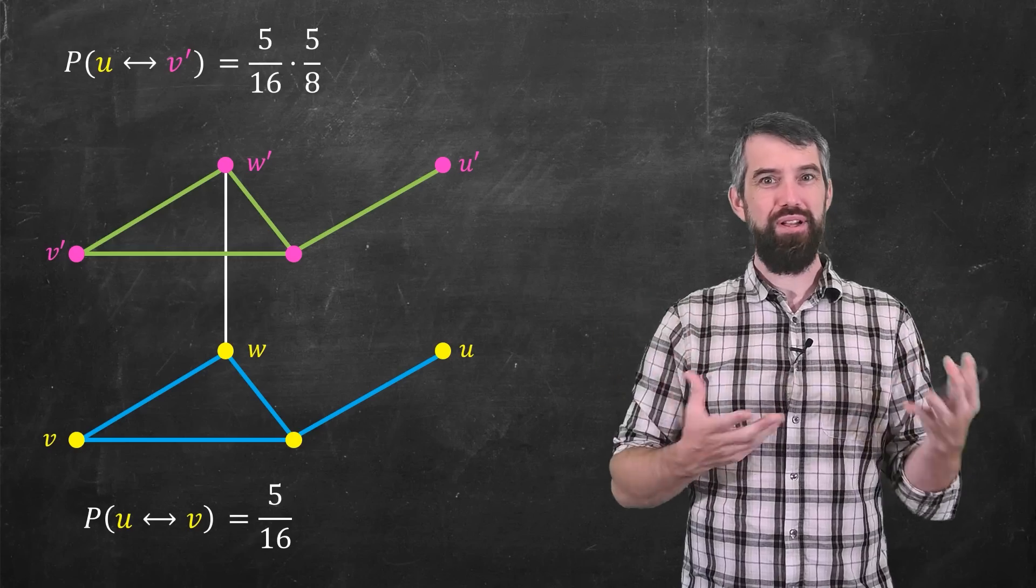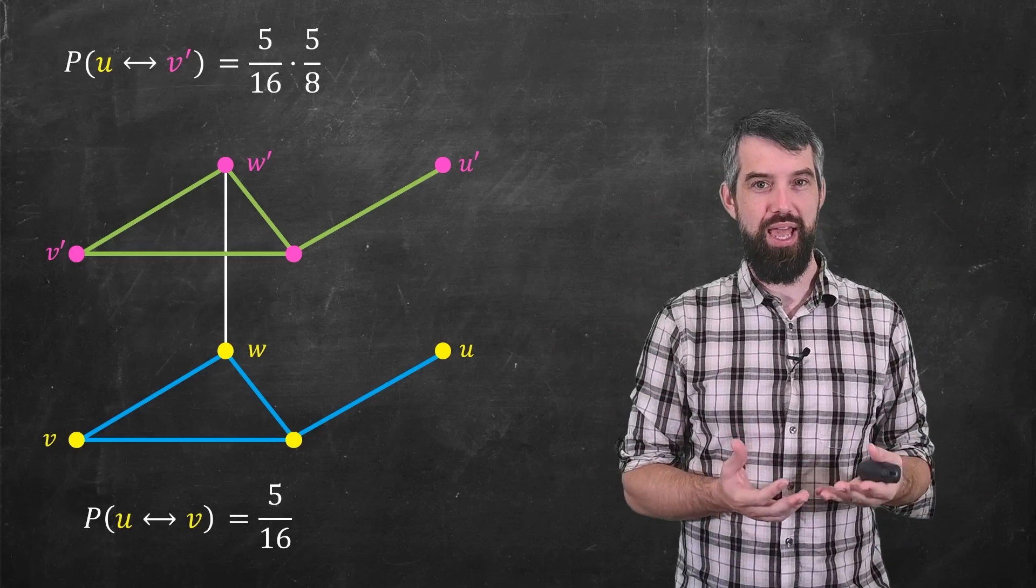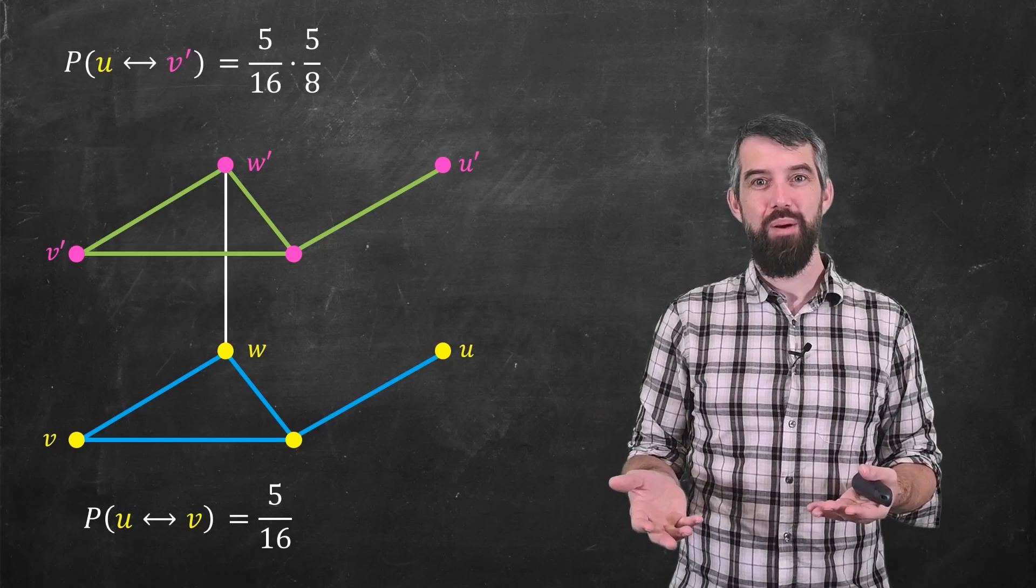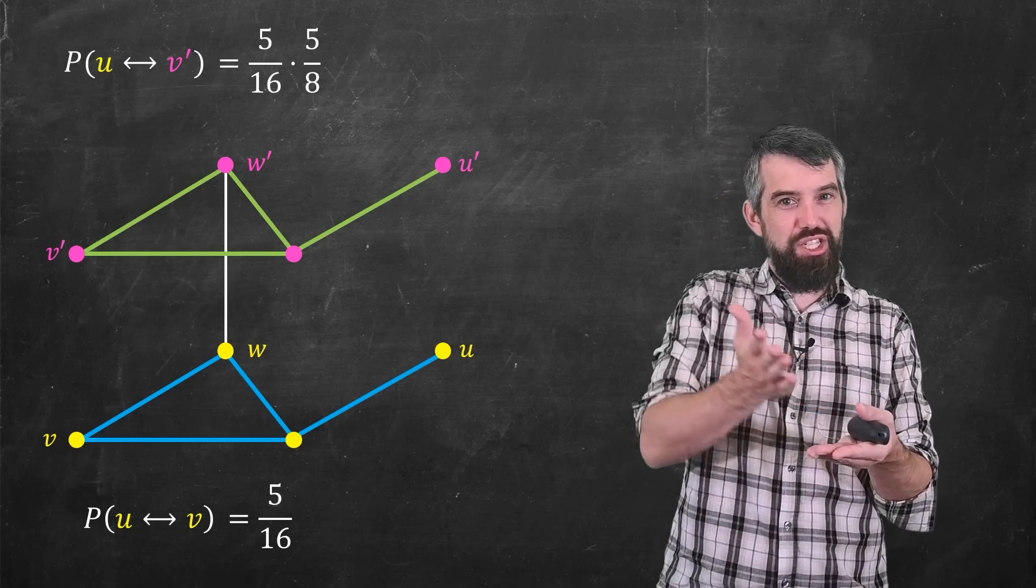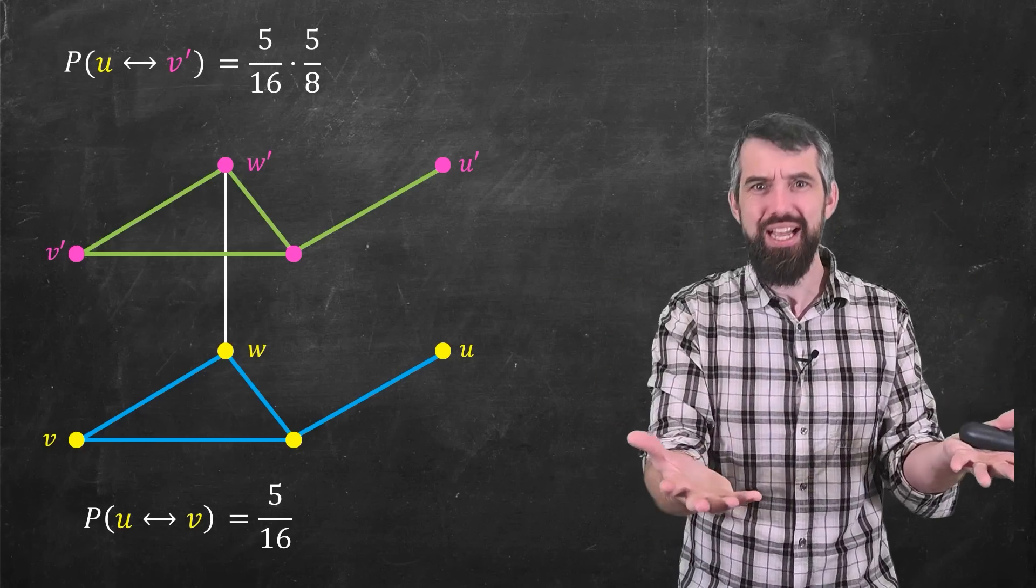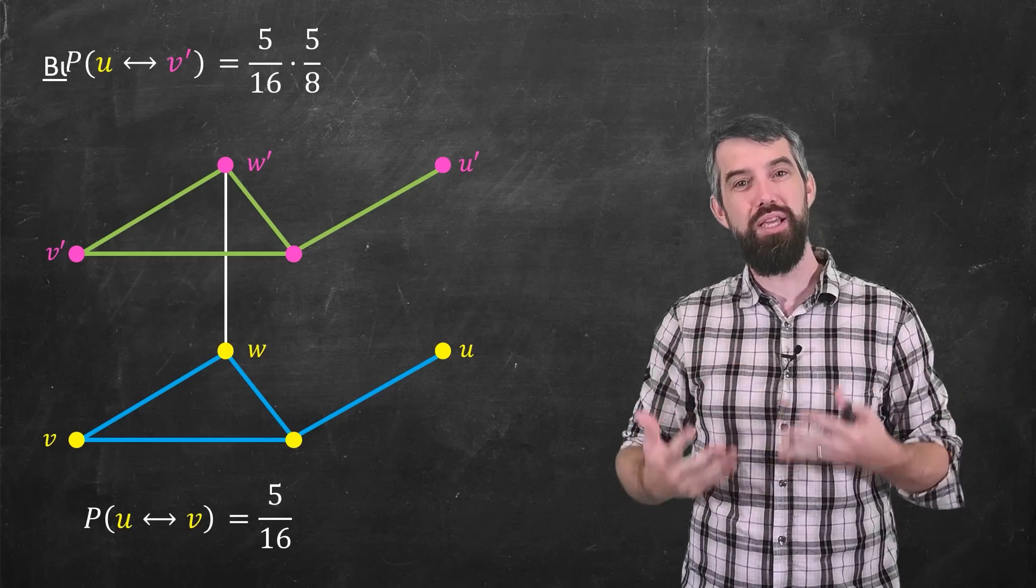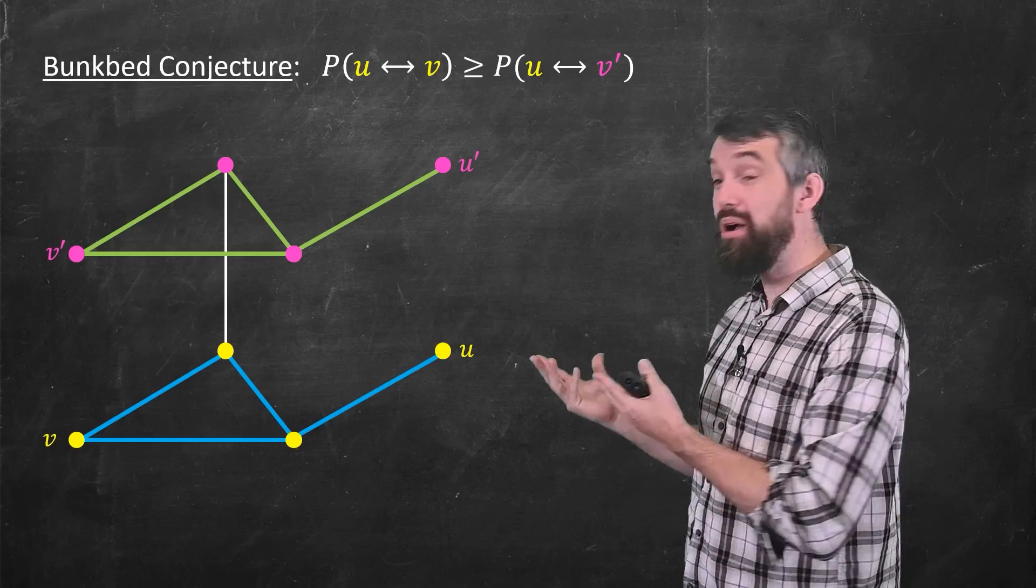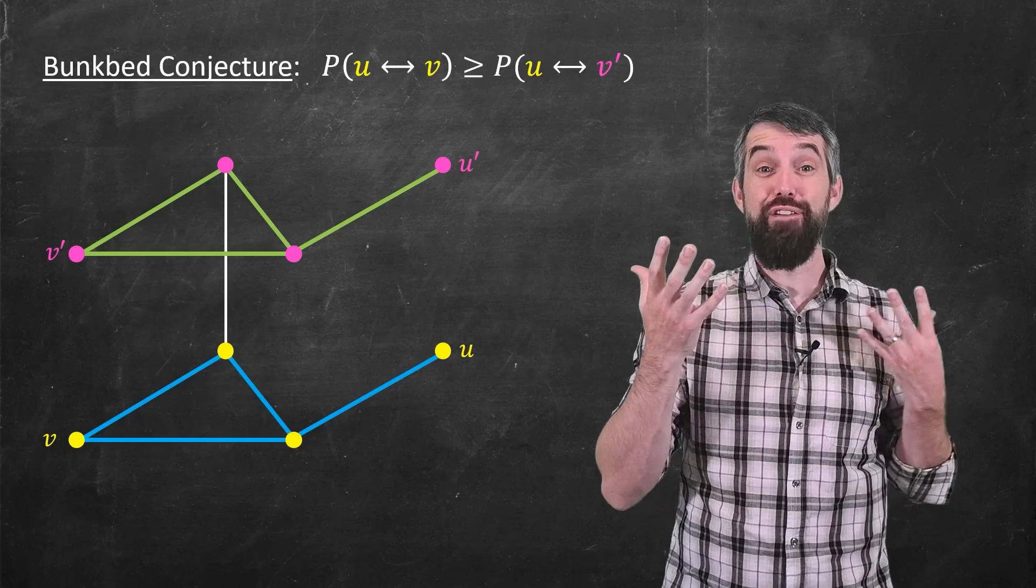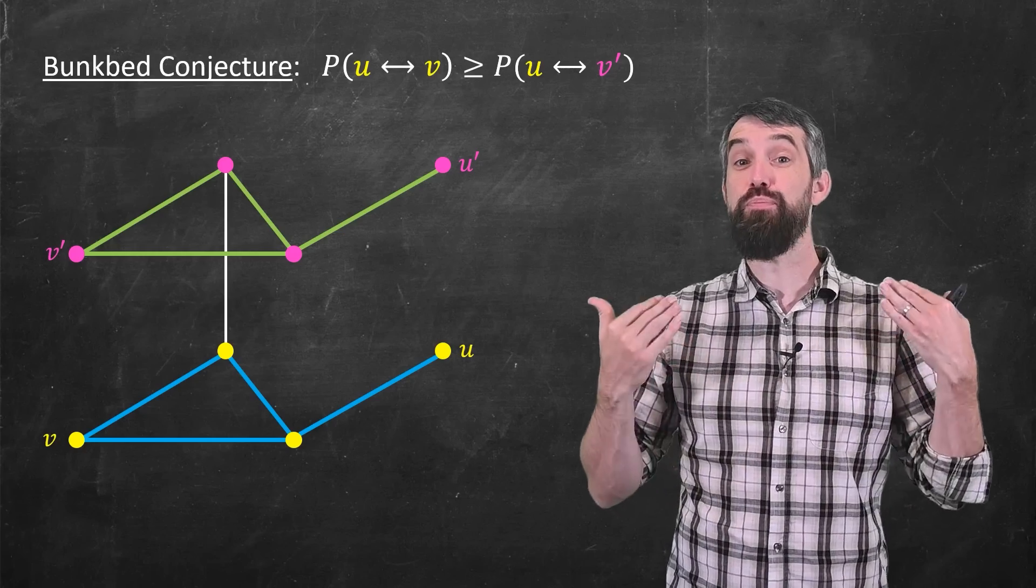And so it sort of feels intuitively obvious that this will always be the case. If you have enough posts, then maybe the probabilities will be equal. But if you cut down on the number of posts, you're more restricted on the pathways to get to the top, right? So the probability on the top should always be smaller or equal. And so ultimately, this bunk bed conjecture really feels like it ought to be true, but it's just evaded proof since 1985, where it sort of started its origins, until the present.